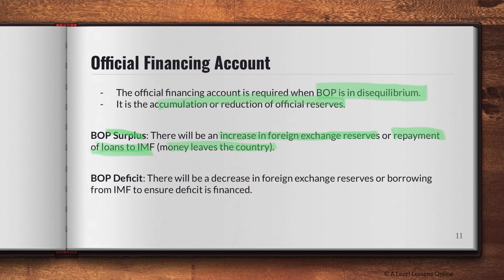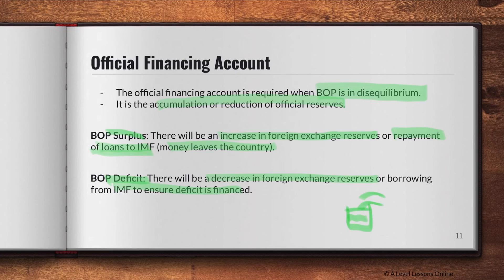The financing account helps to balance things out and make the economy stable again. If there's a deficit, there will be a decrease in forex reserves or borrowing from the IMF to finance the deficit. Think of it like a cup of water: if it's not full enough, the financing account tops it up; if it's overflowing, it removes the excess — ensuring your cup is always at the same stable level.